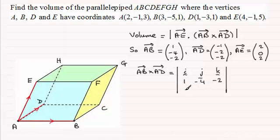And the components of AD which are -1, -2, -2. And if you work this out you'll find that you get the vector (4, 4, -6).